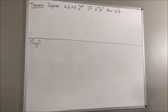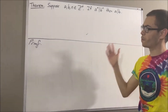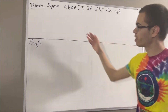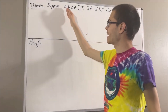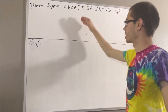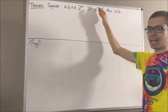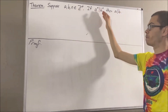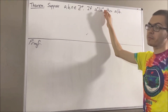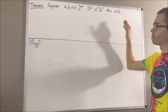Hello! In this video, we are going to prove the following theorem. Suppose a, b, and n are positive integers. If a to the n is a divisor of b to the n, then a is a divisor of b.